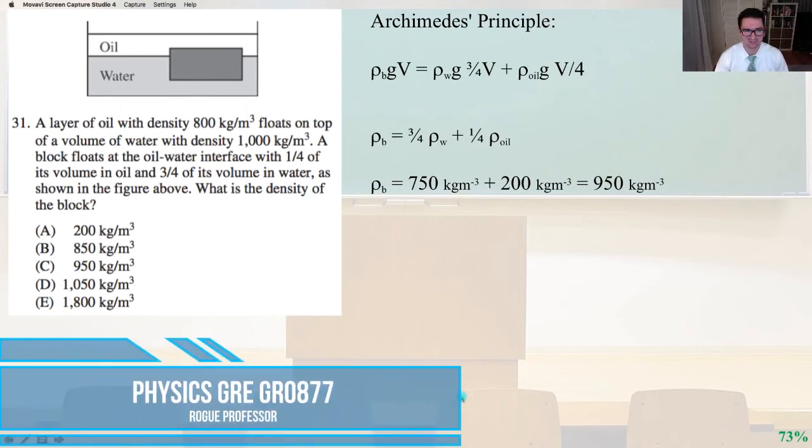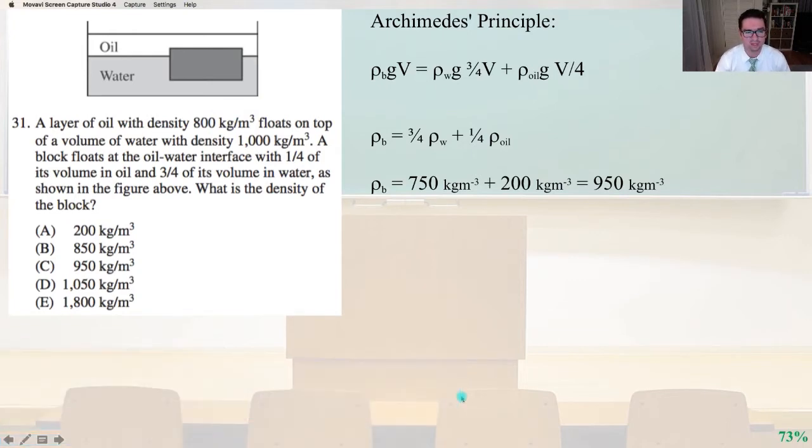Everybody who's made it this far, congratulations! We're powering through solutions to the Physics GRE GR0877. We're on number 31. A layer of oil with density 800 kg per cubic meter floats on top of a volume of water with density 1000 kg per cubic meter. A block floats at the oil-water interface with one-quarter of its volume in oil and three-quarters of its volume in water, as shown in the figure above.